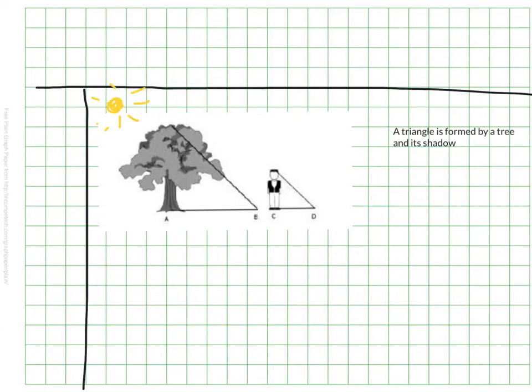So one thing I know is that if the sun is shining down, this triangle is formed by a tree in its shadow. You can see there's a triangle in here formed by the tree in its shadow. So that's one thing I know.